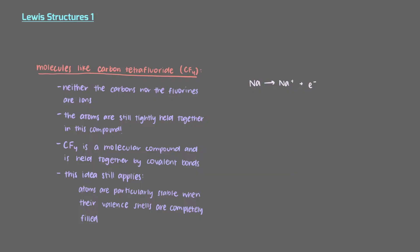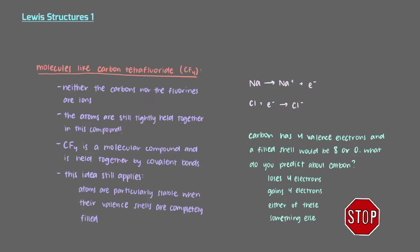So sodium loses an electron to be Na+, and chlorine gains an electron to be Cl-. But what about carbon? It has 4 valence electrons and a filled shell would be 8 or 0. What do you predict about carbon?